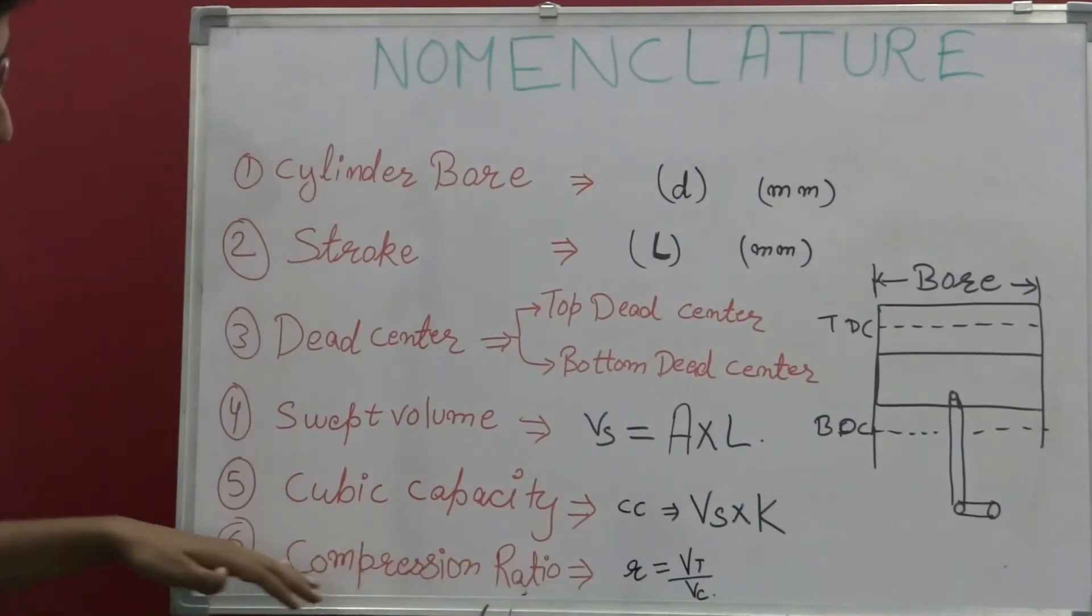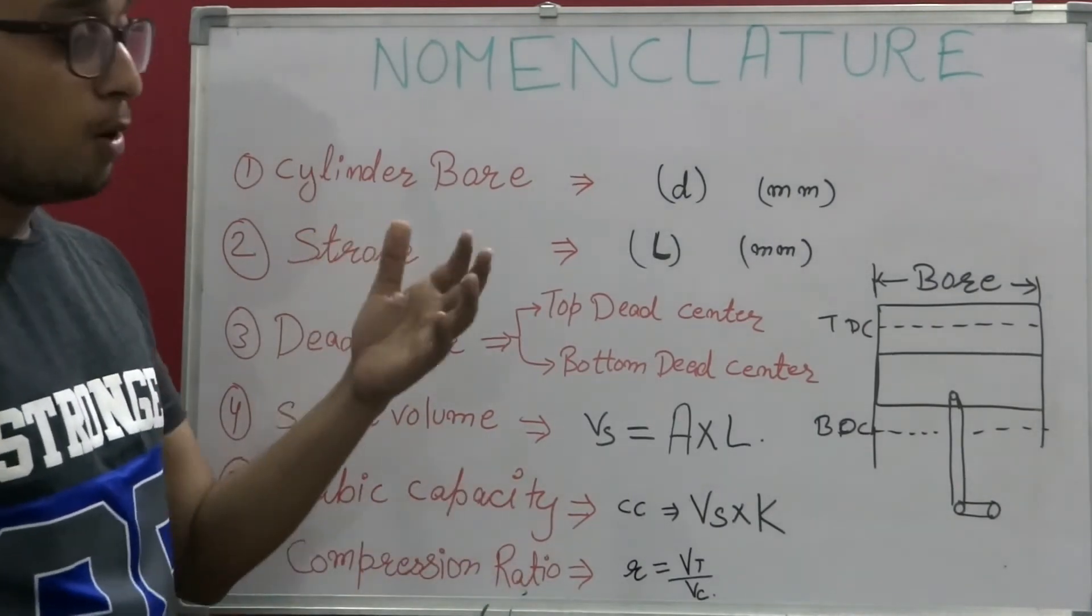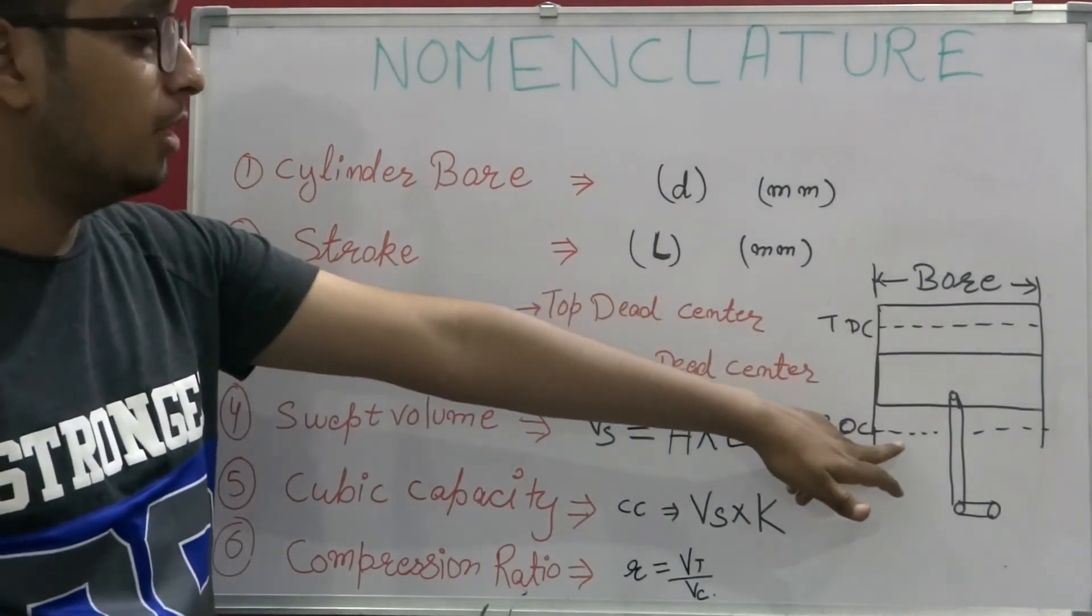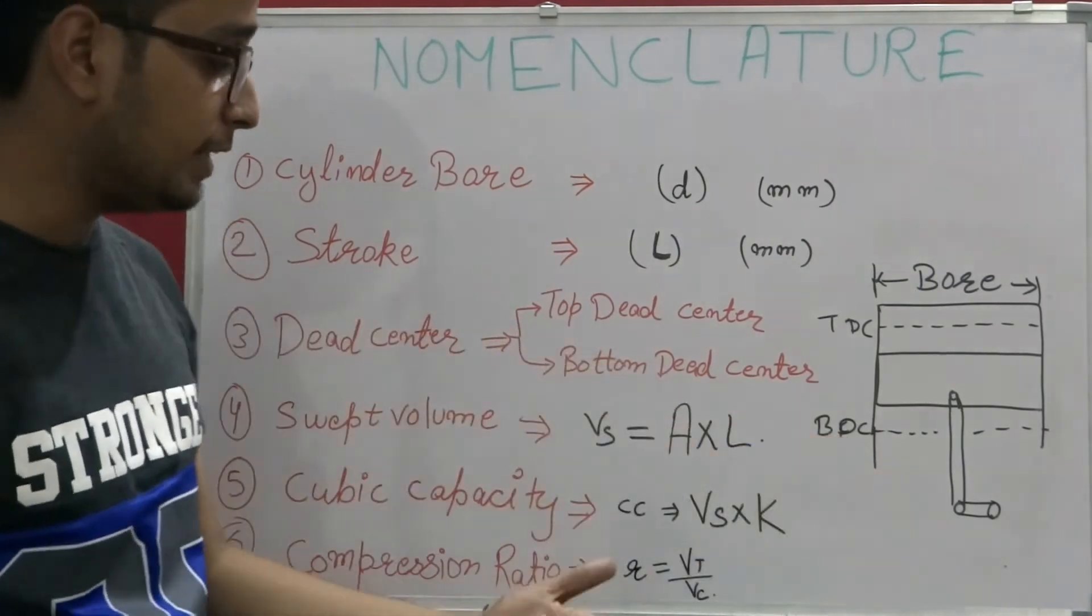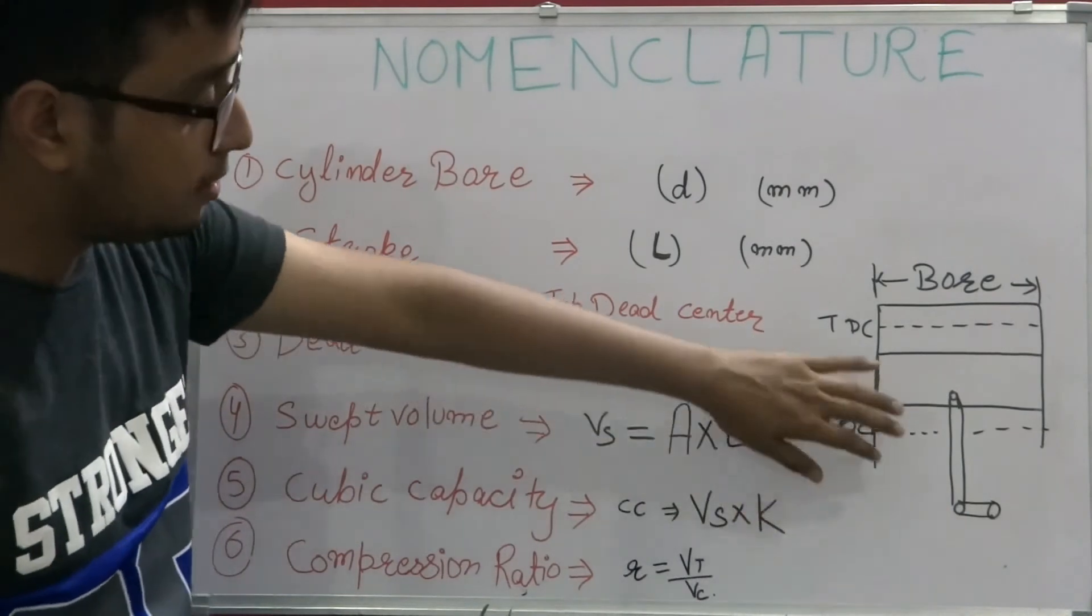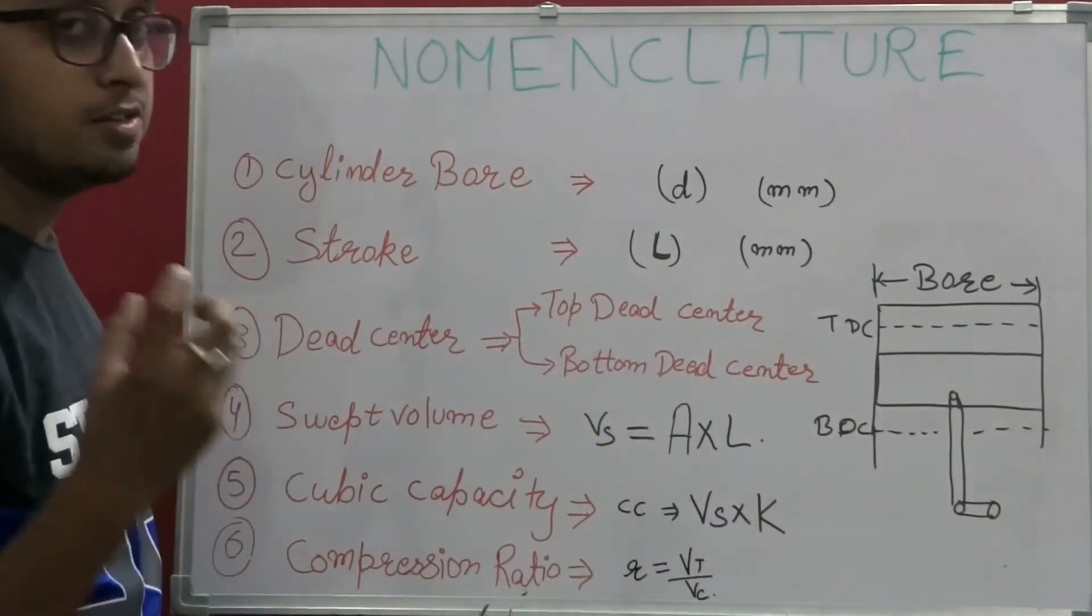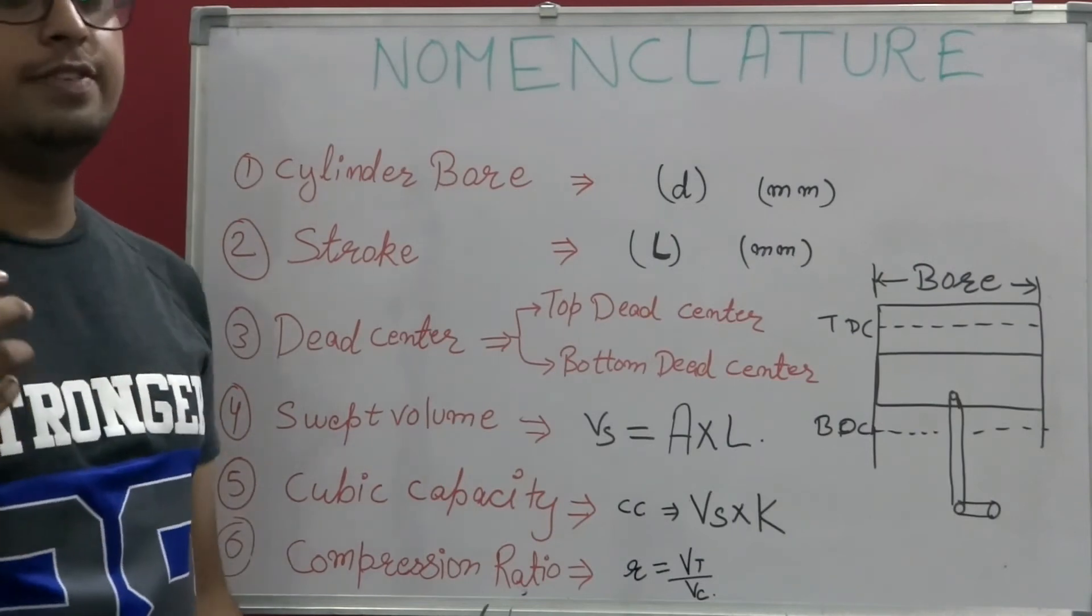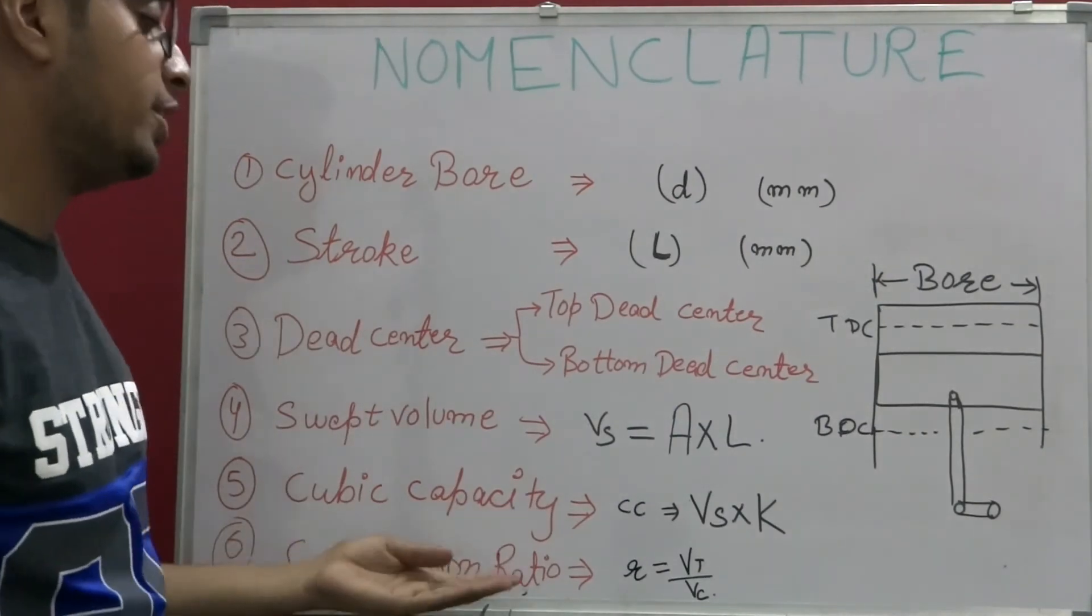After that down there is compression ratio. Compression ratio is the amount of fuel that is available at the top of the piston when it is at BDC and when it has travelled to the TDC. The clearance volume means the amount of fuel that is left when the piston is at TDC is known as compression ratio.